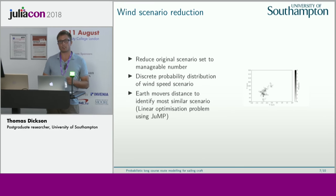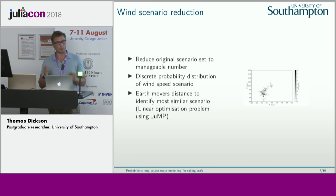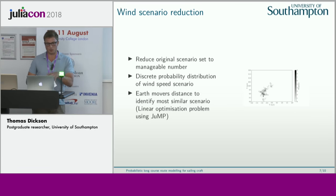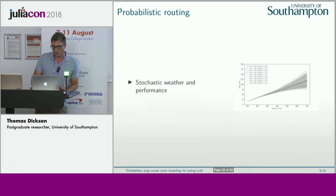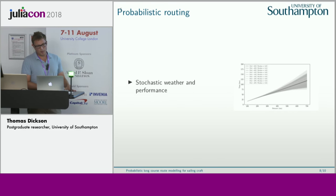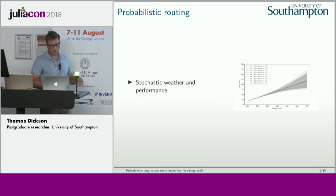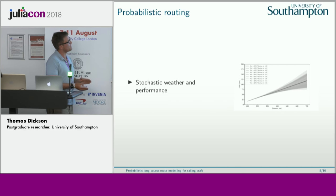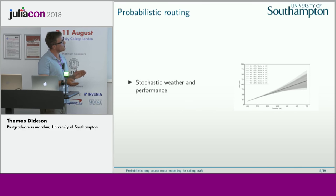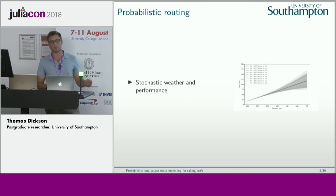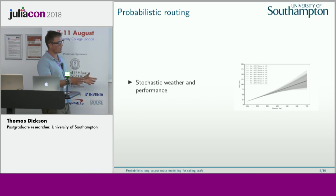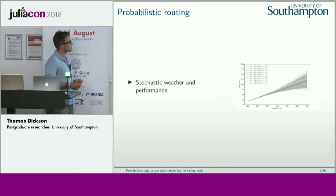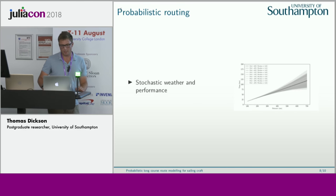The Earth Mover's Distance is the cost of turning one probability distribution into another — commonly used but not in this field. Here's an example including stochastic weather and performance: as distance increases, the predicted time of arrival fans out. The idea is we're not giving point estimates — we're saying it's more likely for you to arrive in this time interval rather than just saying 'you'll arrive in two weeks' — no one's going to believe that.